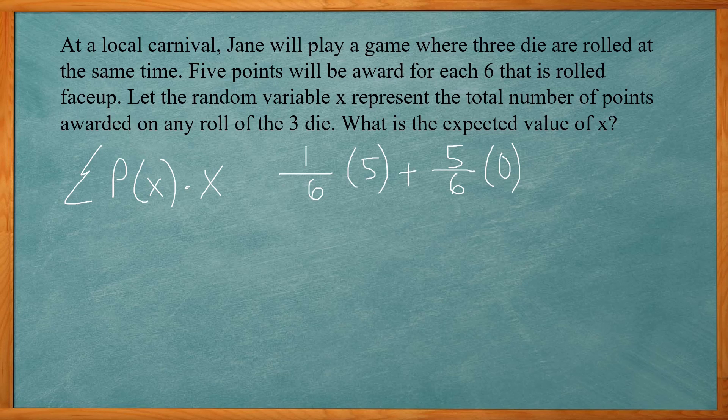So that's on the first dice. On the second dice it's going to be the same thing. You have a one out of six chance of getting a six and you get five points for getting that. And then you get a five out of six chance of getting something other than a six, and you get zero points for that. So the same thing repeated for the third one.